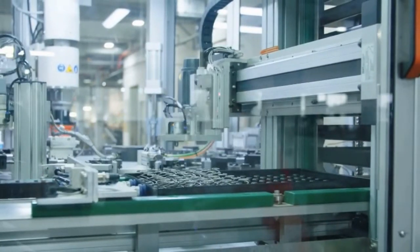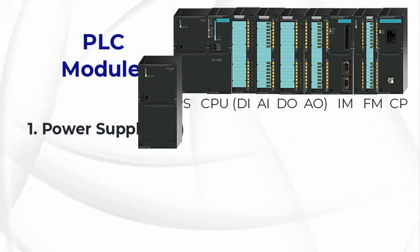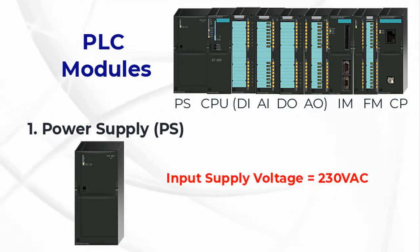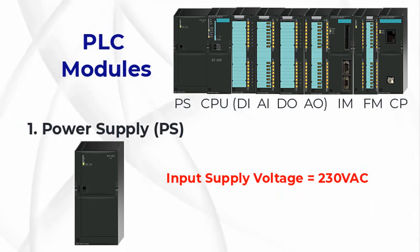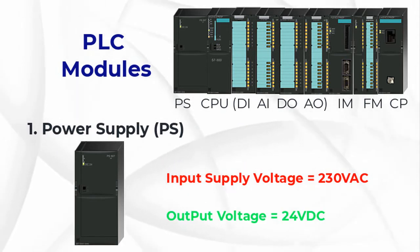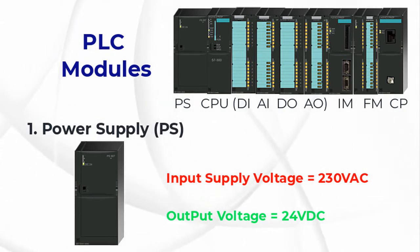Let's discuss the modules that are used in PLC. 1. Power Supply (PS): The power supply is connected to AC mains for the supply voltage. The output of the power supply is a DC voltage used to power all of the other modules associated with the PLC. Usually the output voltage is 24 volt DC. The power supply does not provide power for field devices.